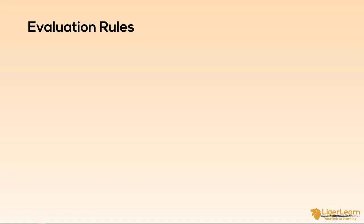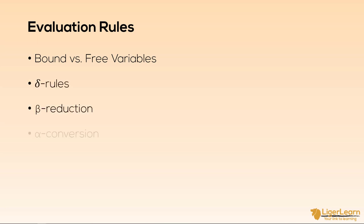So far we have seen and understood the syntax of the lambda calculus, but that is not enough. We need to be able to take a lambda calculus program and run it and get the corresponding results. In the next sections, we are going to cover the rules which we follow to evaluate lambda expressions. We'll start with defining bound and free variables, then cover delta rules, then beta reduction, then alpha conversion, and finally eta conversion.